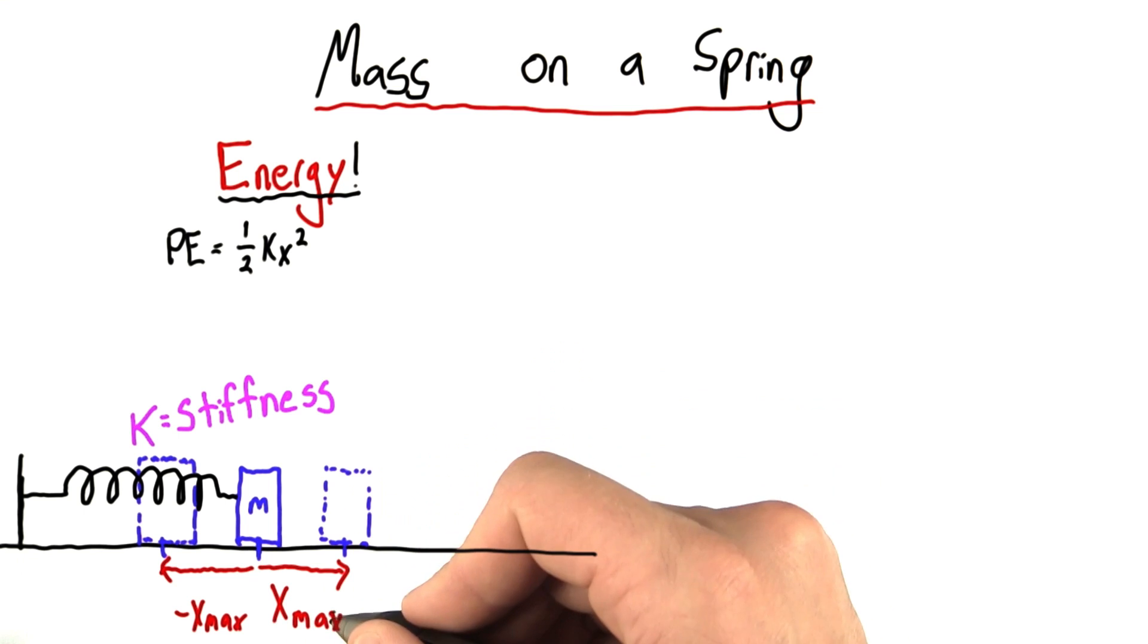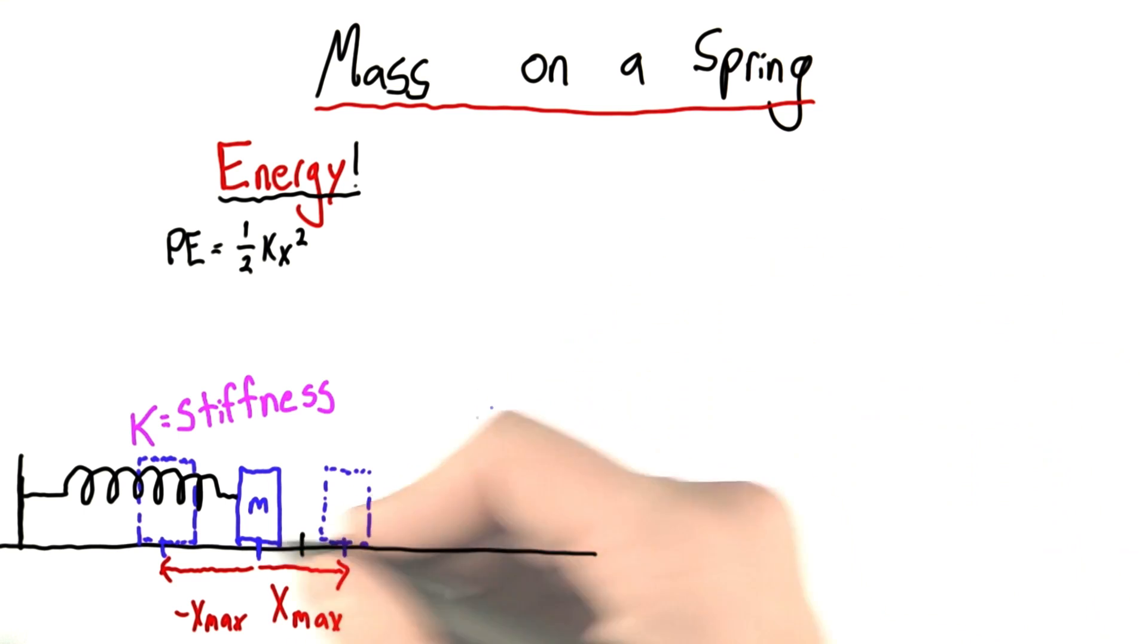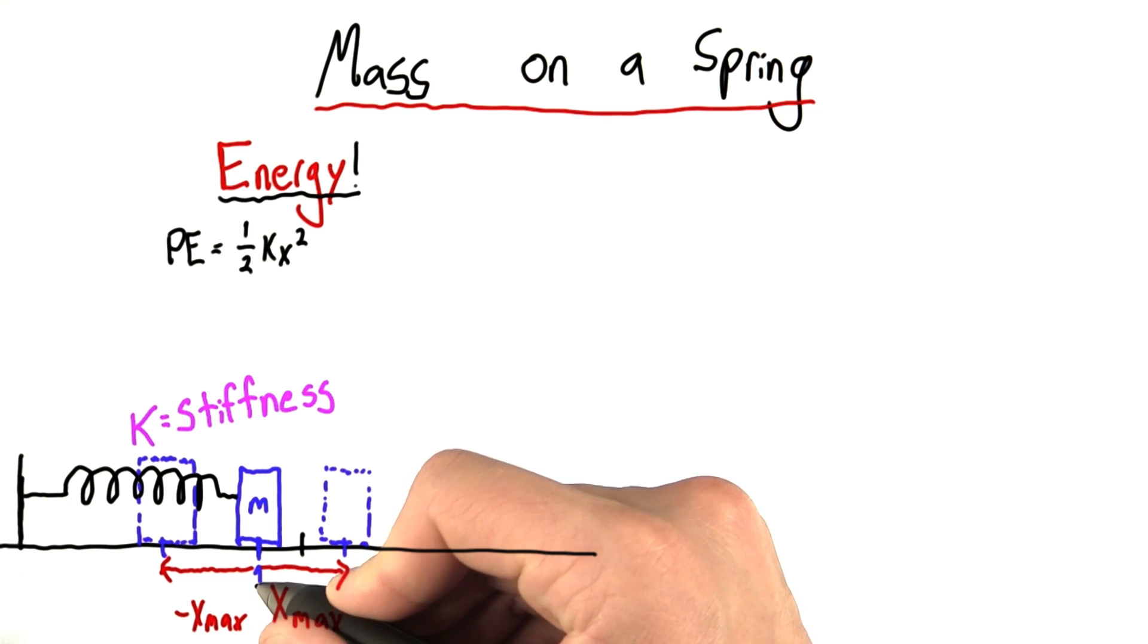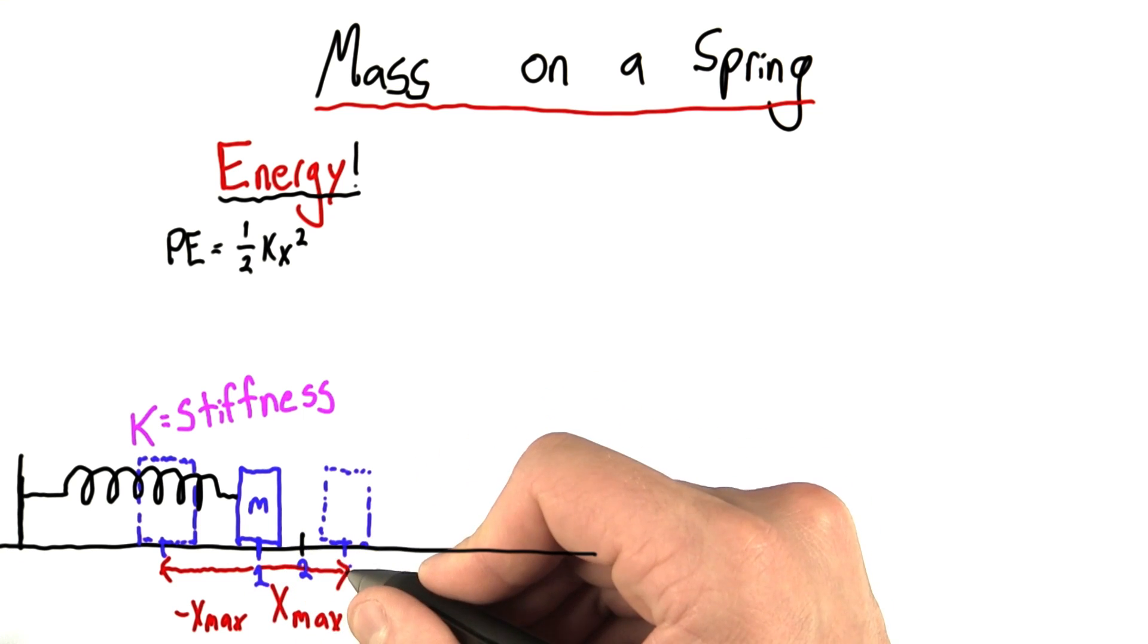When the mass goes over here, it would be x max. Maybe here it would be half of x max, and so on. And so if we look at, let's say, three possible positions for where the mass could be, in its back and forth oscillations. Like position 1, equilibrium, position 2, this sort of midpoint, and position 3, x max.